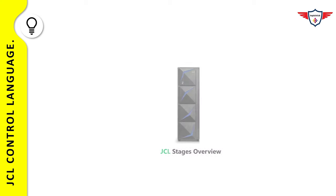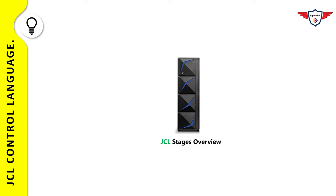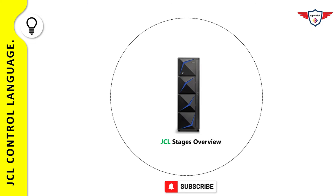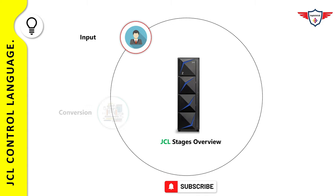Before discussing the different categories of job control statements, let's understand the different stages of JCL. This will help you visualize what happens behind the scene when you submit a job on the mainframe. During the life of a job, JES2 and the base control program of ZOS control the different phases of overall processing. The job queues keep track of jobs waiting to run, currently running, waiting for output, or waiting to be purged. Generally speaking, a job goes through six different stages: input, conversion, processing, output, print, and purge.